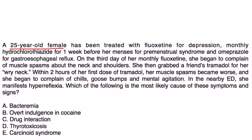A 25-year-old female has been treated with fluoxetine for depression, monthly hydrochlorothiazide for premenstrual syndrome, and omeprazole for GERD. On the third day of her monthly fluoxetine, she began to complain of muscle spasms around the neck and shoulders. She then took a friend's tramadol for her wry neck.